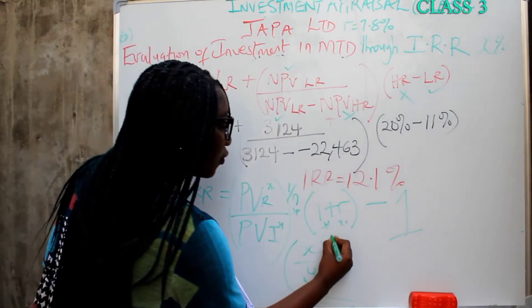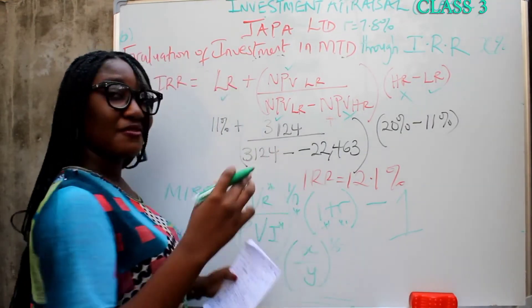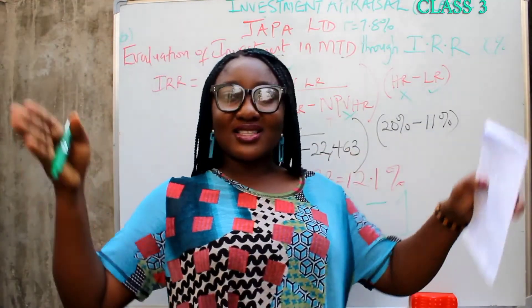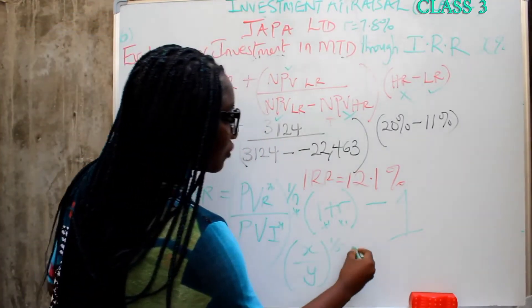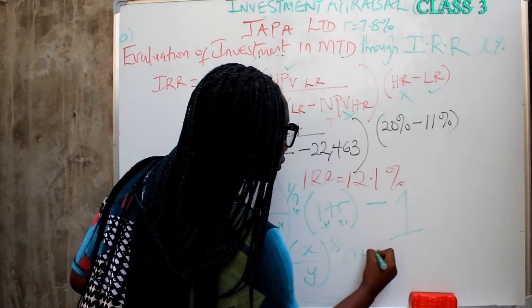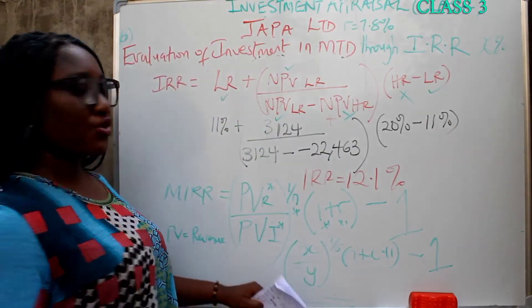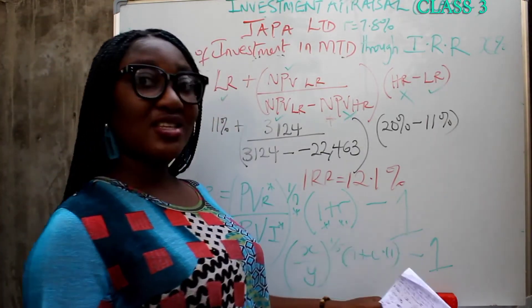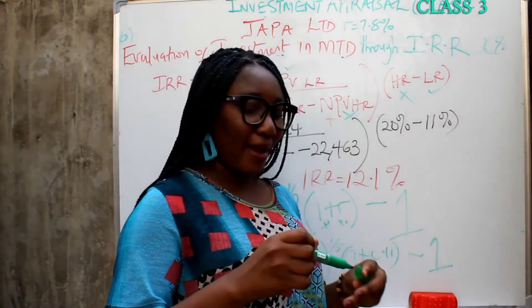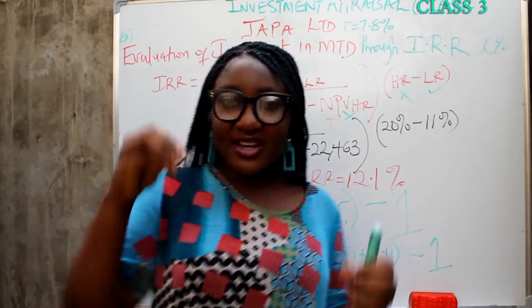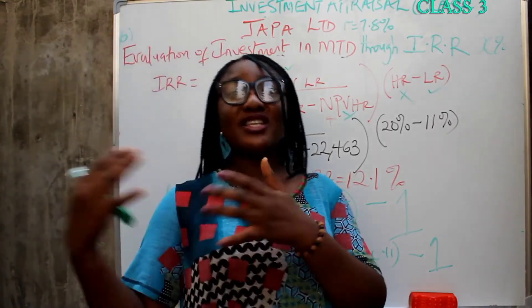I'll serve another example after this that shows investment in year one and investment in year three. You raise it to 1 over 5 because it's five years — five cash flows. One plus R: cost of capital is 11%, so that's 1 plus 0.11, minus 1. Then punch this into your calculator and you'll get a rate close to your IRR — that's your MIRR. But the relevance is not so obvious here since investment is only in year zero, so I'll read out another question.